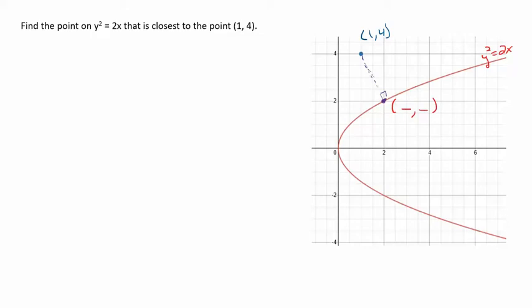We know that this distance we need to minimize, and that's the key with these kind of problems: you want to figure out what you want to minimize. We want to minimize the distance between the point (1, 4) and some point on the graph. So we have a couple choices here. We want to get this down to one variable.